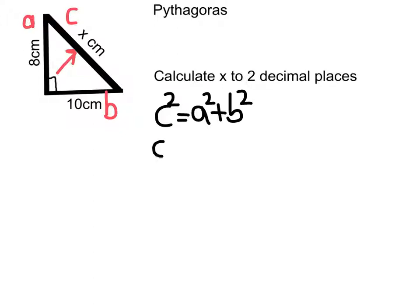Next, we put in our numbers. So we've got c squared is equal to 8 squared plus 10 squared.